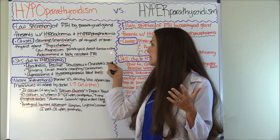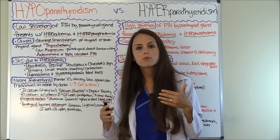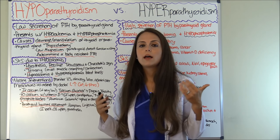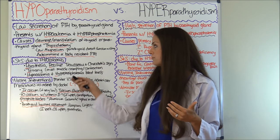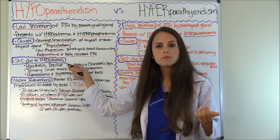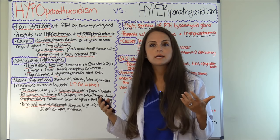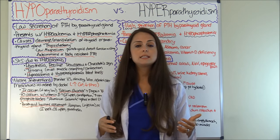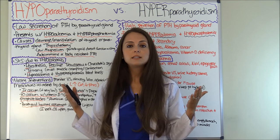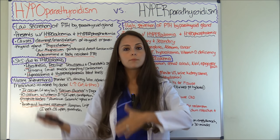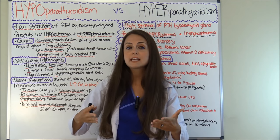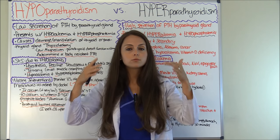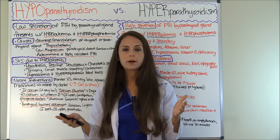Magnesium plays a role in how the parathyroid works, and if you don't have enough magnesium, the parathyroid isn't going to work well and it's not going to release PTH. Another cause is autoimmune — the body attacks the gland, releases antibodies, and the gland doesn't work. Or the body is resistant to PTH. The parathyroid is releasing the hormone just fine, but the kidneys and the bones don't respond.